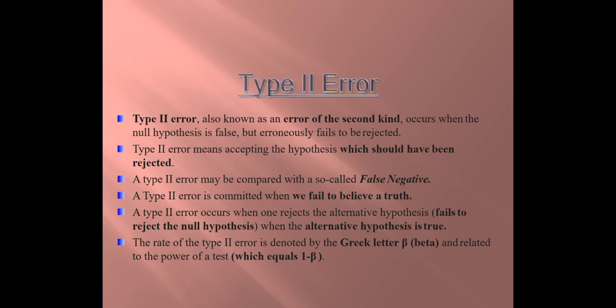Type 2 error is also known as an error of the second kind. It occurs when the null hypothesis is false but fails to be rejected. Type 2 error means accepting the hypothesis which should have been rejected — we are accepting the hypothesis when it should have been rejected.